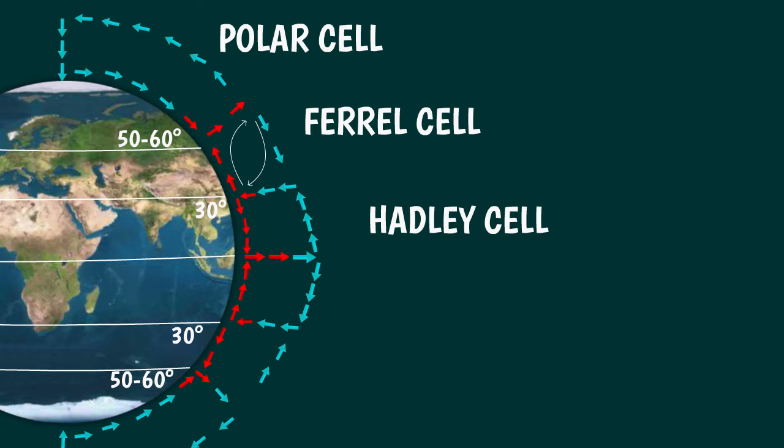The reason for this is that the air in the Hadley cell and in the polar cell moves due to temperature differences, while the Ferrel cell owes its existence to the presence of the other two cells.